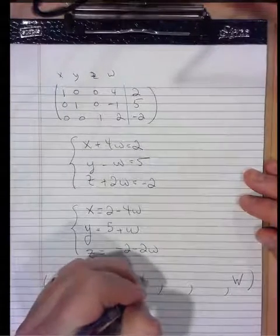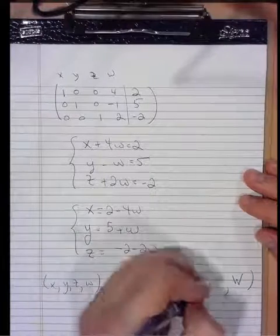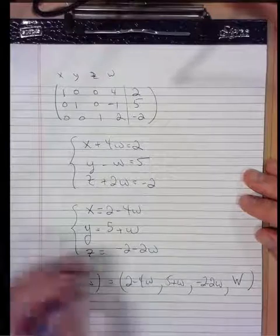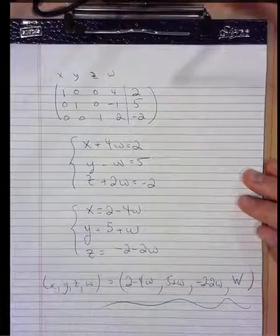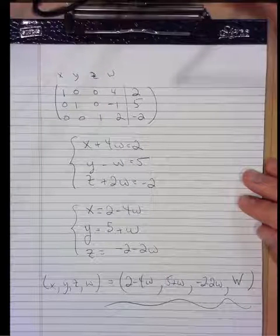But given a value of w, then x is 2 minus 4w, y is 5 plus w, and z is negative 2 minus 2w. Like that. And that would be the solution set for this system. A free parameter locking down an infinite number of solutions.